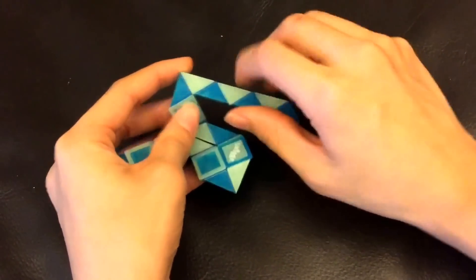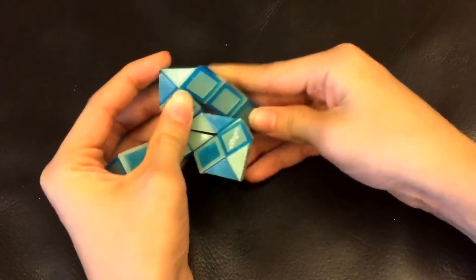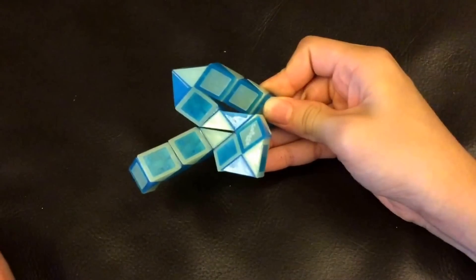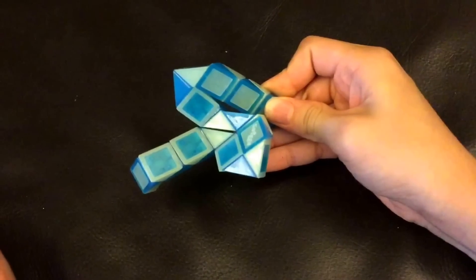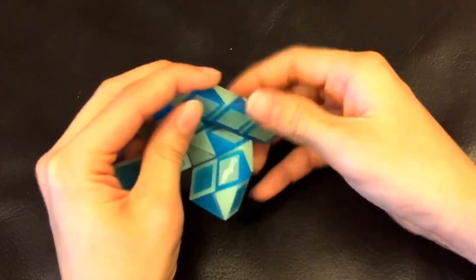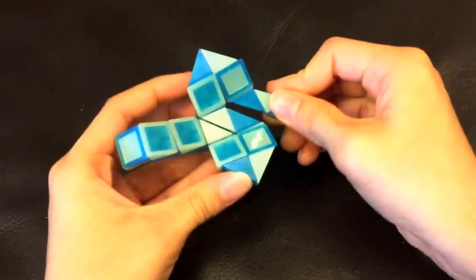Now this blue one is going to go down and then you're going to move this blue one so that these two blue ones match to make a square like this.